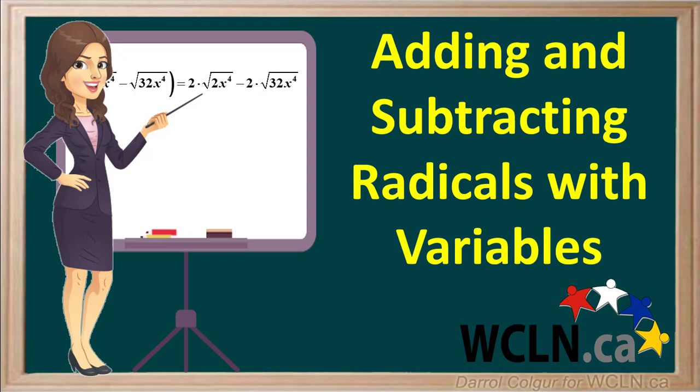Variables are just letters that represent numbers, so they can be treated just like numbers when adding and subtracting radicals.